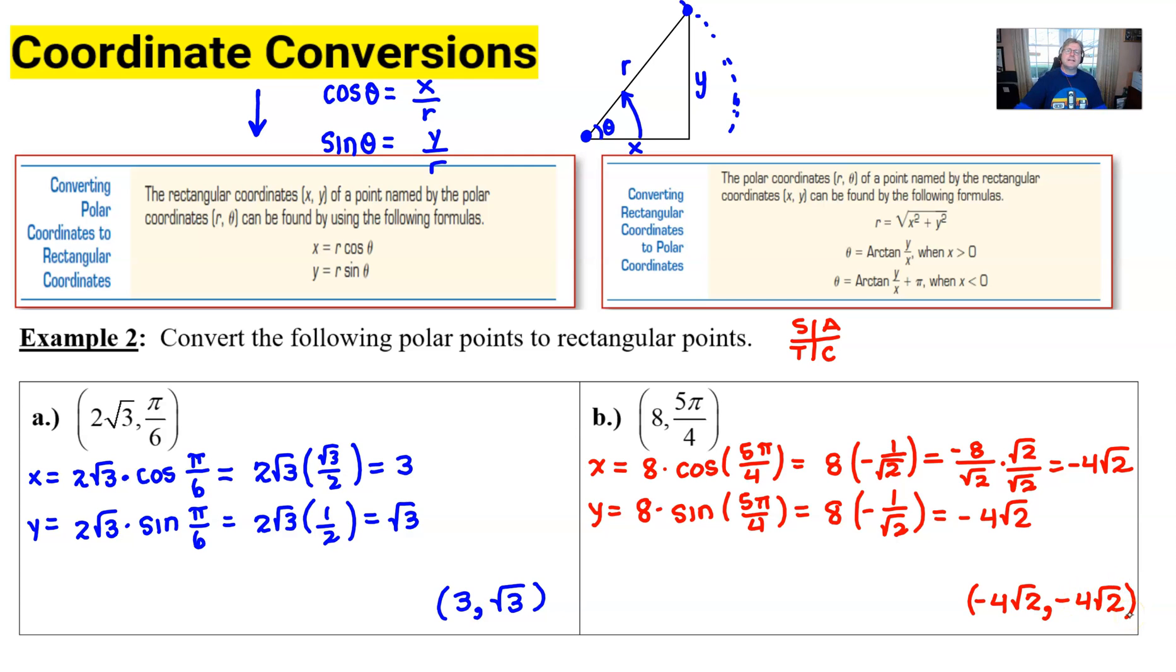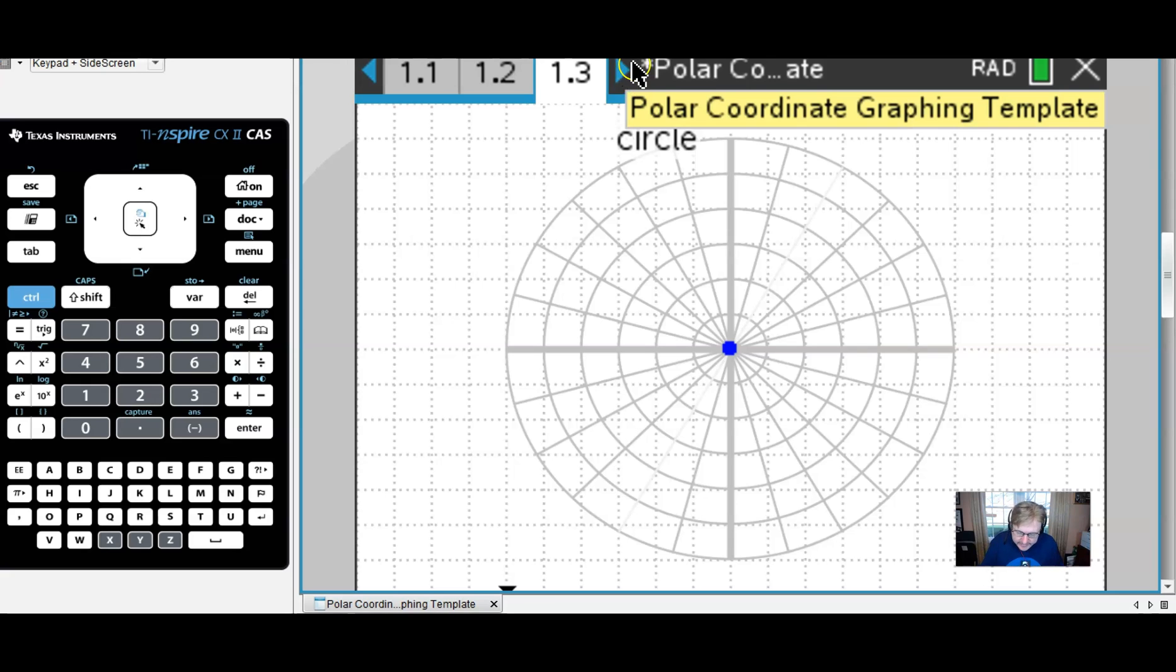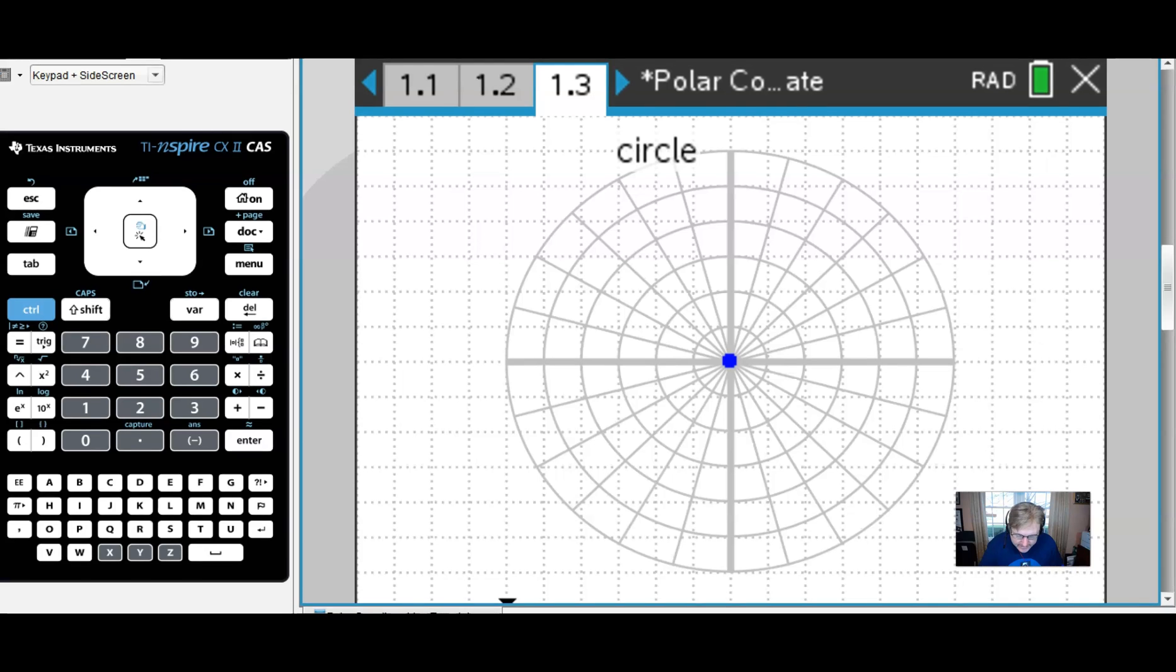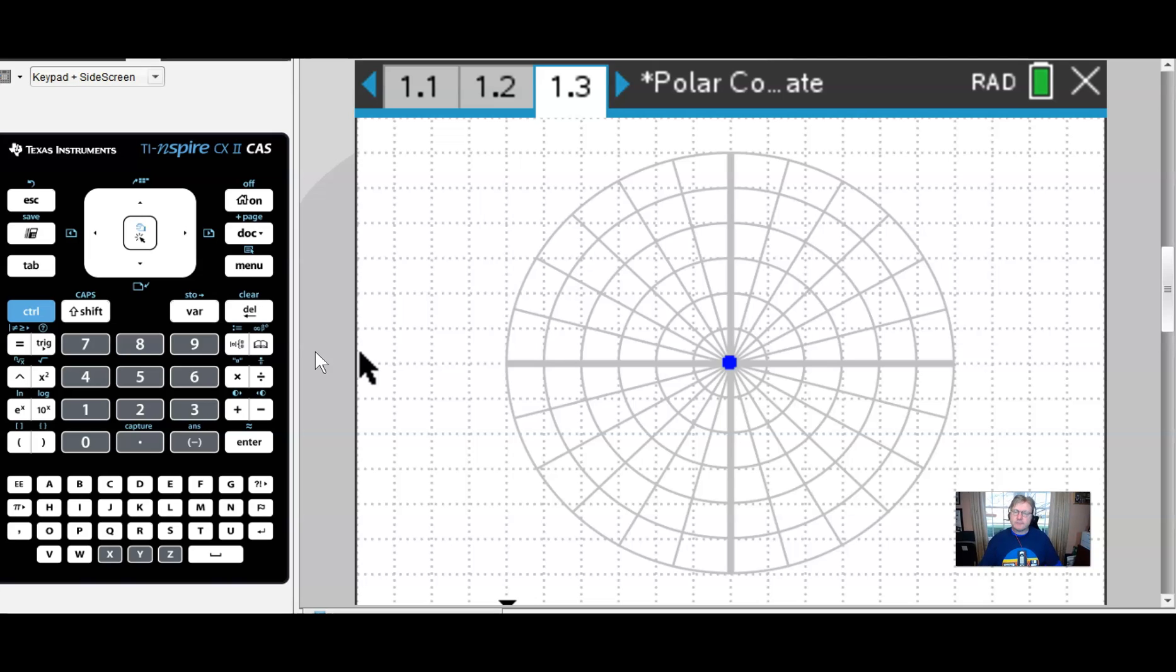Now I want to show you something really neat with the graphing calculator that will kind of put this into a better perspective. So what I've got right here is a document that I had created on the TI Inspire a few years ago that really allows my students to bridge the gap between polar coordinates and rectangular coordinates.